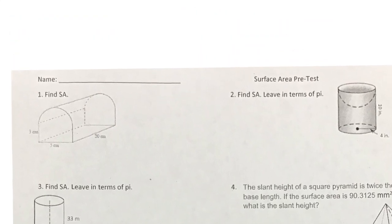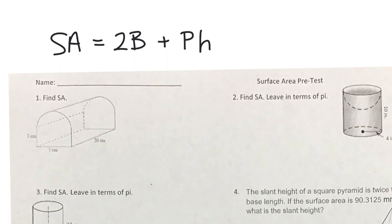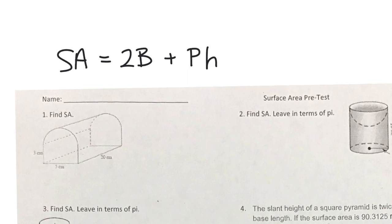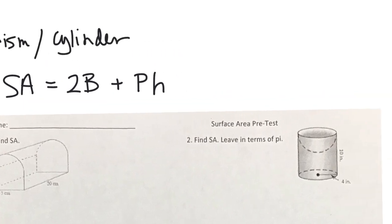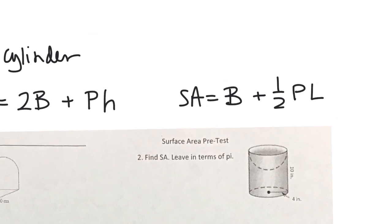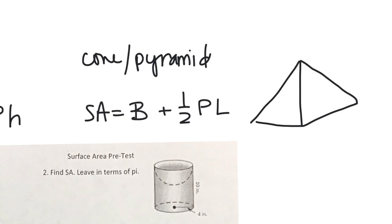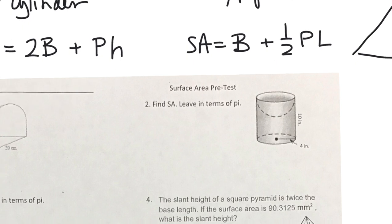In surface area we have two different formulas. For spheres and prisms it's two base areas plus the perimeter times the height — good for all prisms and cylinders. For cones and pyramids, which have just one base, it's one base area plus half the perimeter times the slant height. Those come from triangle formulas. For pyramids and cones, the slant height comes up the middle of your base to the vertex.